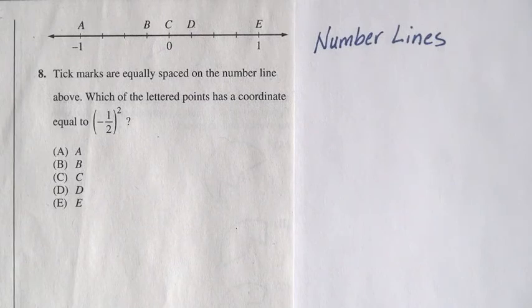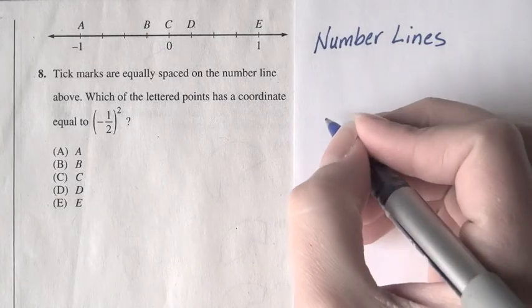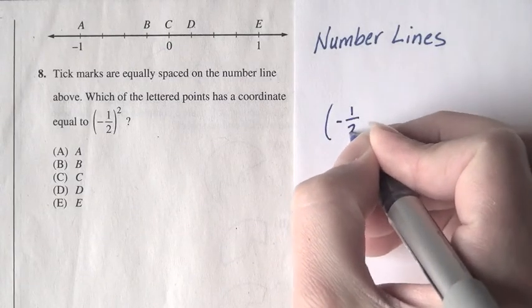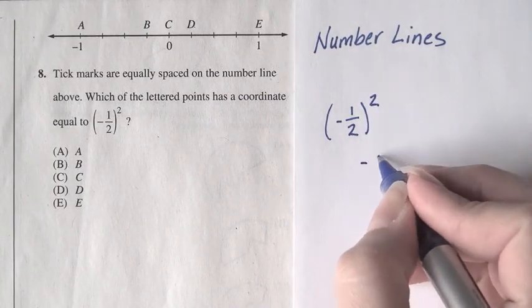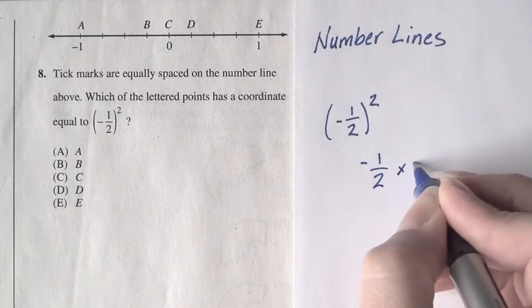To start this problem, let's compute negative 1 half squared. So if we have negative 1 half and we want to square it, that's just negative 1 half times negative 1 half.